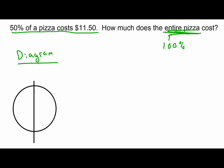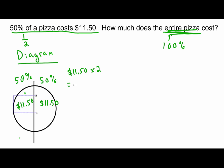Using the diagram: 50% is one half, so I drew a pizza and cut it in half. This side is 50% worth $11.50, and the other side is also 50% worth $11.50. Together, $11.50 times two makes $23 for 100%, which is the entire pizza.